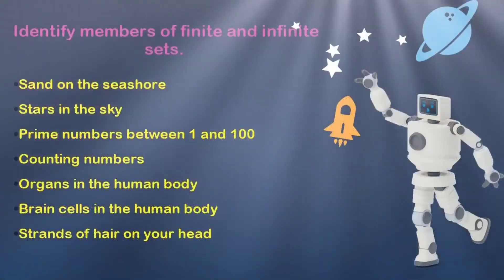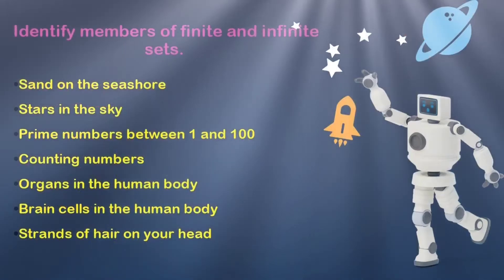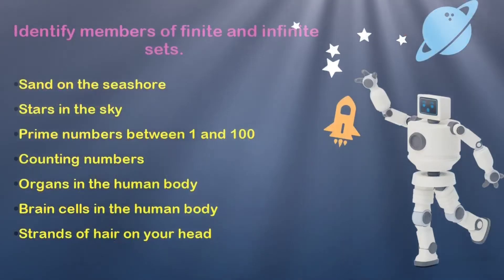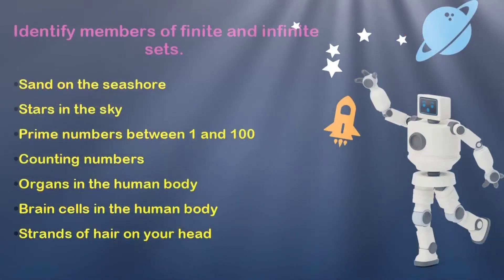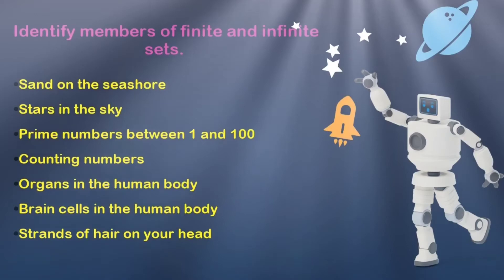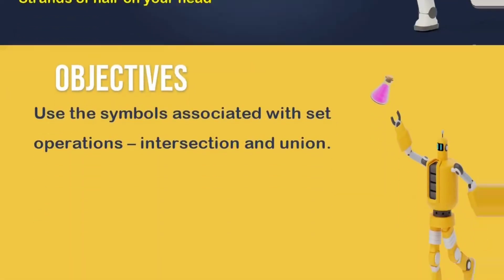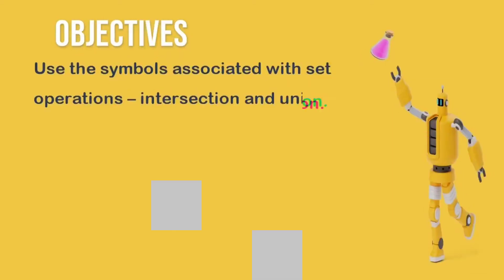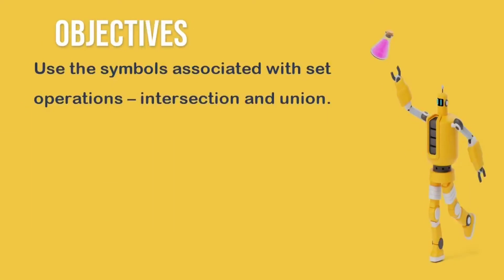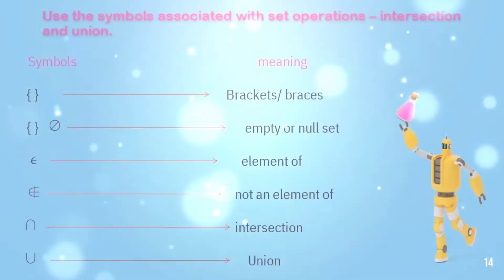Finite and infinite sets are what the curriculum stresses. Some examples have been placed here based on the definitions. Use your knowledge to sort the list to see which is finite and which is infinite — pause and try this one. Our next objective is to use the symbols associated with set operations, specifically the intersection and the union. Here we have the symbols and their meanings.